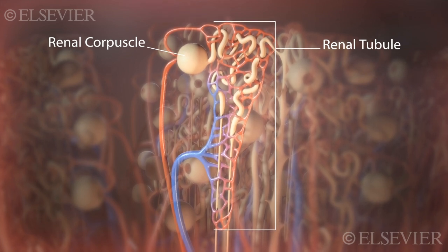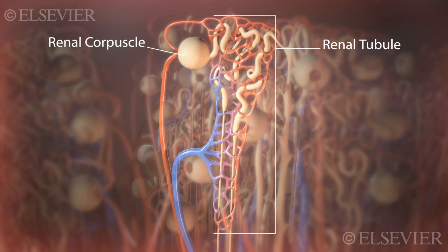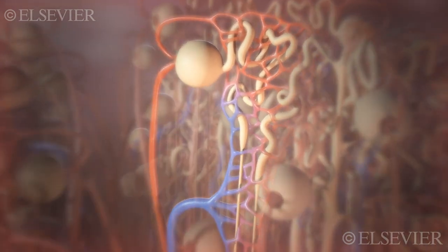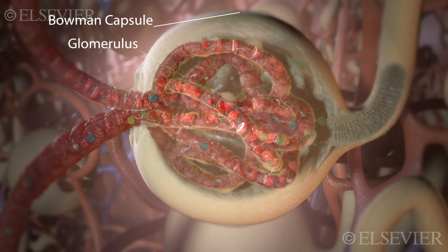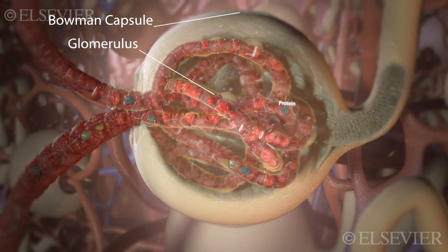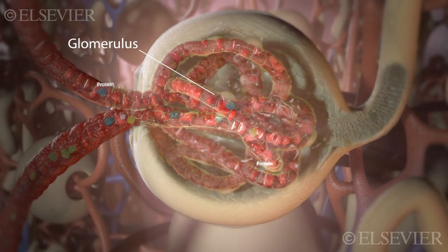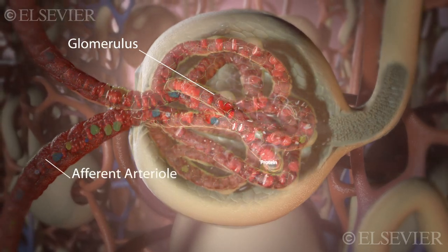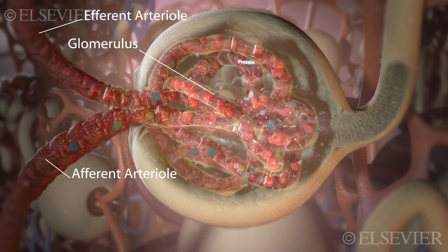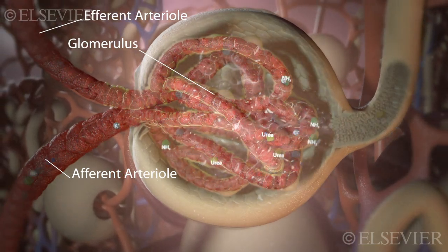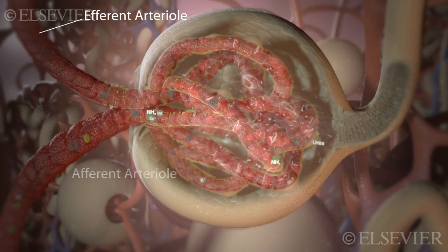The renal corpuscle is the first part of the nephron and makes up most of the kidney's cortex. It consists of a Bowman's capsule and the glomerulus. The glomerulus is made up of loops of capillaries and is completely surrounded by the Bowman's capsule. The afferent arteriole is larger in diameter than the efferent arteriole, which exits the glomerulus. This difference in size means that the pressure of blood in the glomerulus is high enough to filter substances out of the blood.